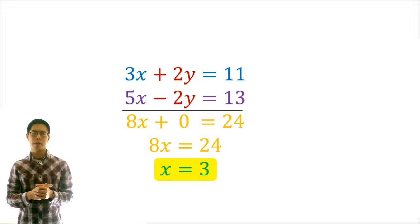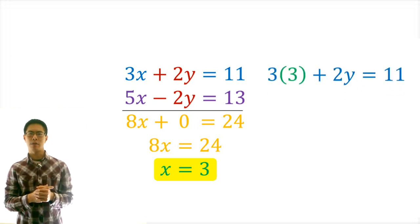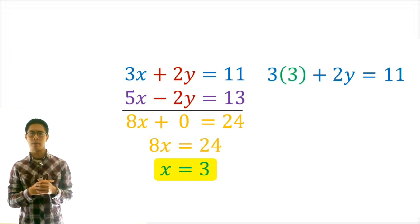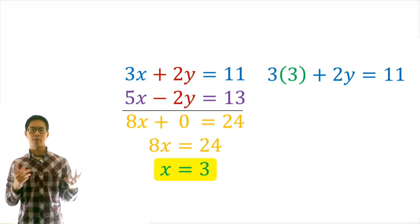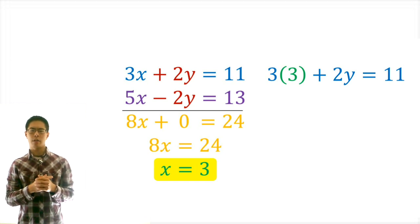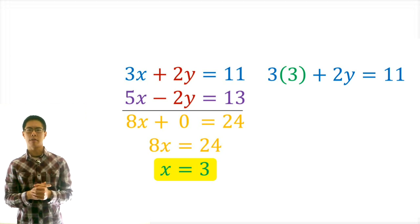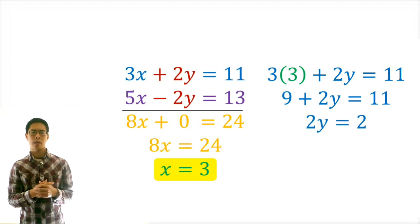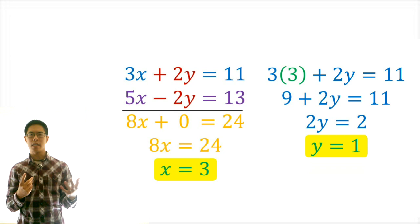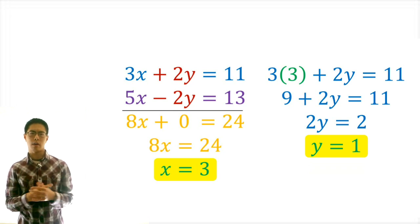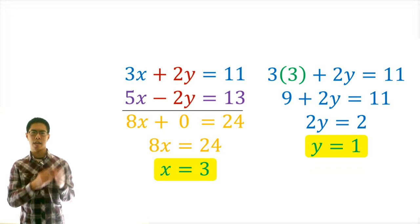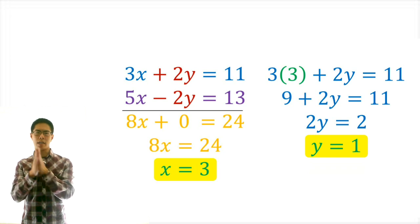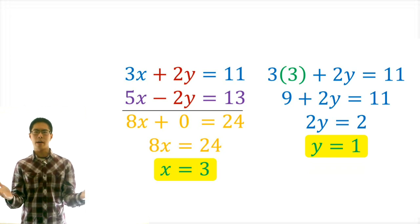Step 5, we plug the variable we found back into one of the original equations to find the second variable. So let's plug x equals 3 back into our first equation, which gives us 3 times 3 plus 2y equals 11. 3 times 3 equals 9, then we subtract 9 from both sides, which gives us 2y equals 2. Then we divide both sides by 2, which gives us y equals 1. So our solution for this system of equations is x equals 3 and y equals 1.